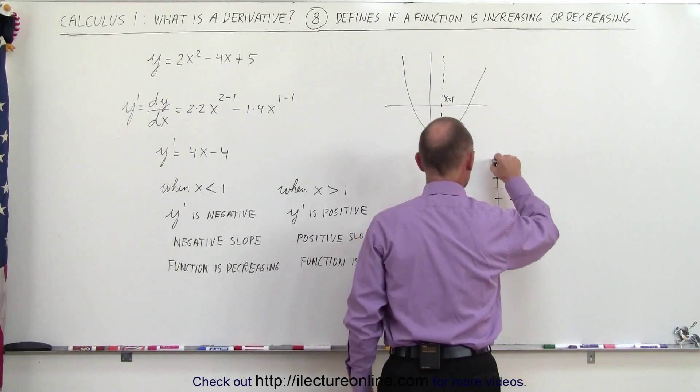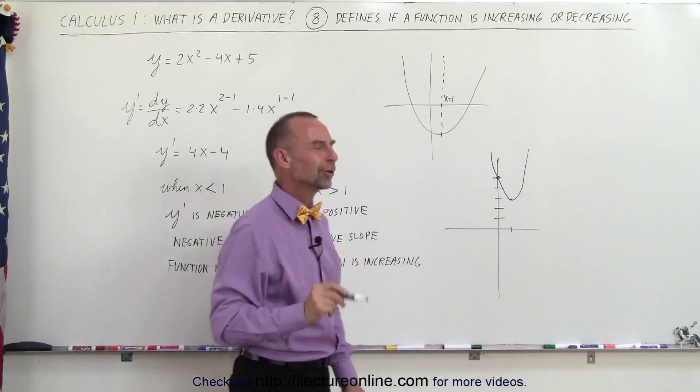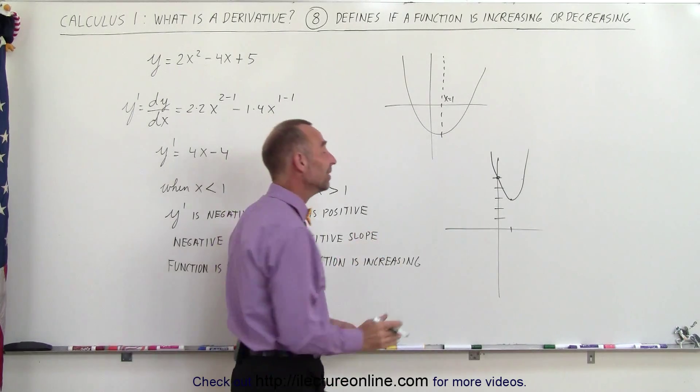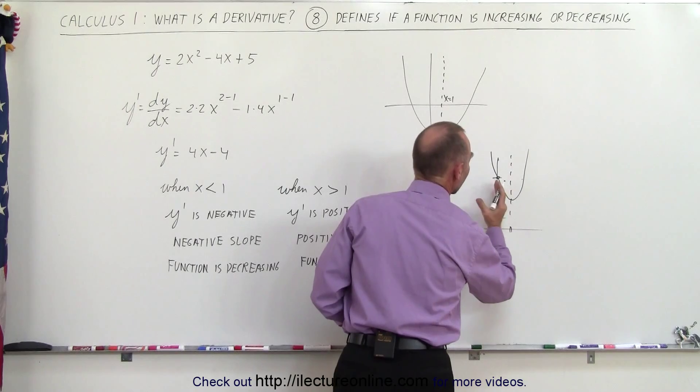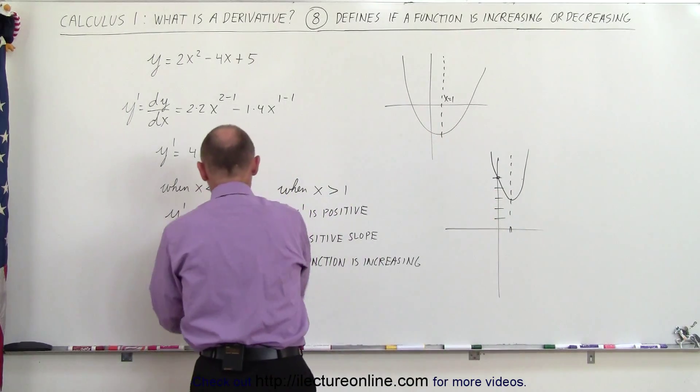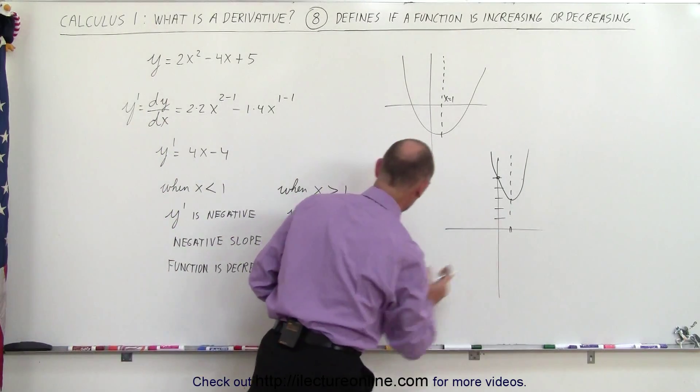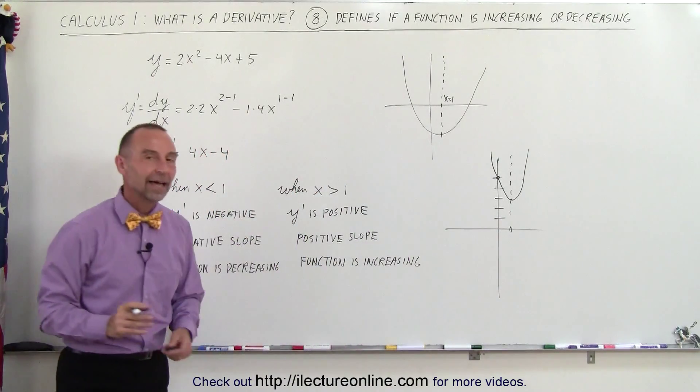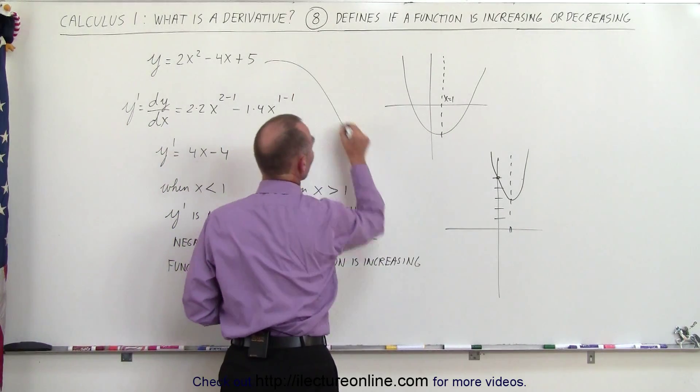So the parabola looks like that. Didn't do a good job again, but you get the idea. So it means that to the left of x = 1, we have a decreasing function with a negative slope. When it's greater than 1, we have a positive slope and the function is increasing. So there you can actually see the graph of this particular function.